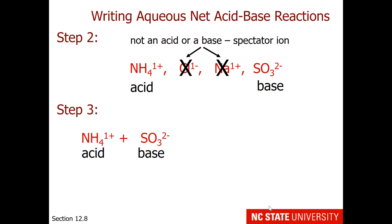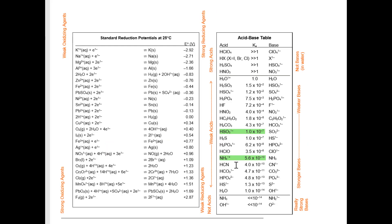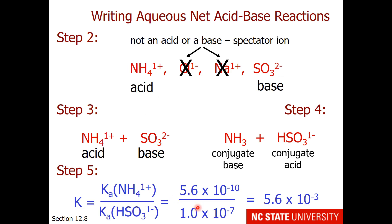Step 3: write down our acid and our base. Step 4: write our conjugates. Ammonium loses a proton to become ammonia, and sulfite gains a proton to become hydrogen sulfite. The equilibrium constant is the Ka of ammonium (the reacting acid) over the Ka of hydrogen sulfite (the produced acid). From the table, Ka of ammonium is 5.6×10⁻¹⁰ and Ka of hydrogen sulfite is 1×10⁻⁷. This gives an equilibrium constant of 5.6×10⁻³ — not a good forward reaction — so we use an equilibrium arrow.